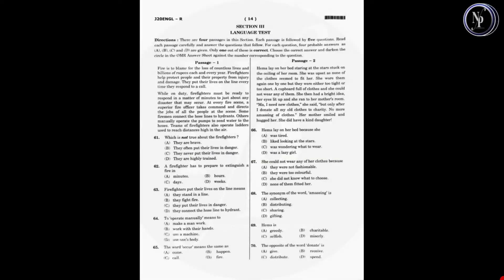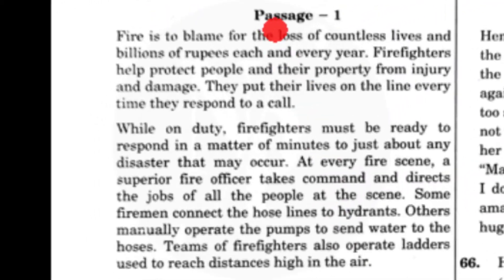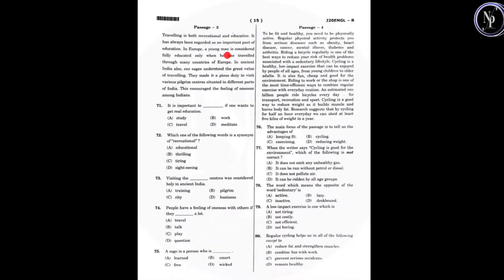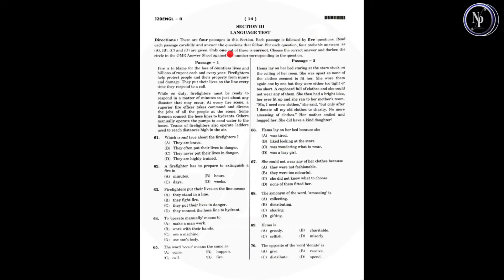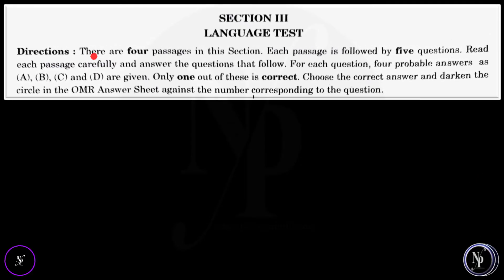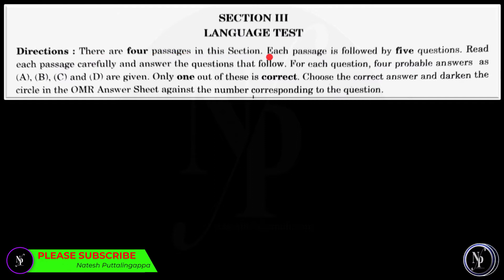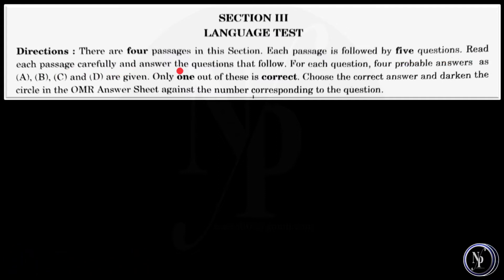In the language test, there will be four passages — passage number one, passage number two, passage number three, and passage number four. There are some directions governing this section. There are four passages, and each passage is followed by five questions. Read each passage carefully and answer the questions that follow. For each question, four probable answers as A, B, C, and D are given. Only one out of these is correct. Choose the correct answer and darken the circle in the OMR answer sheet against the number corresponding to the question.